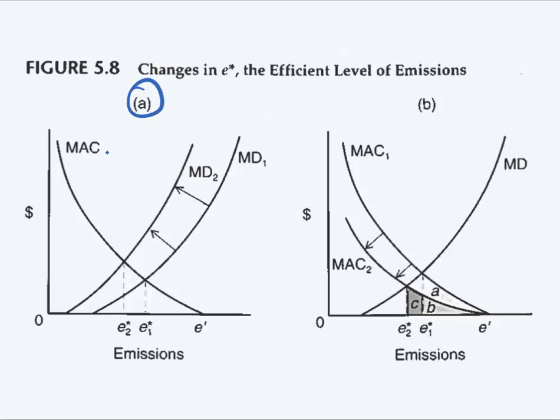So let's first look at figure A. Initially we had a MAC, a marginal abatement cost curve over here, and a marginal damages curve over here. So we were at MD1 and MAC. So that means the two intersect over here where we have an efficient level of emissions E star 1.